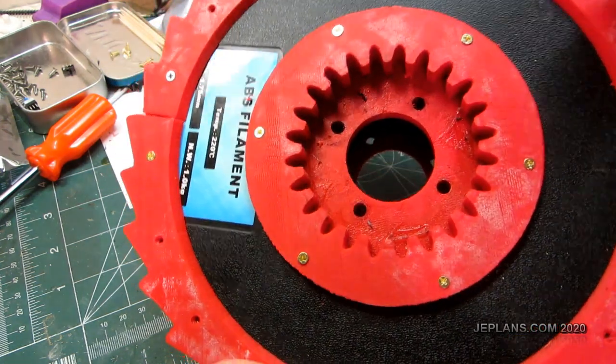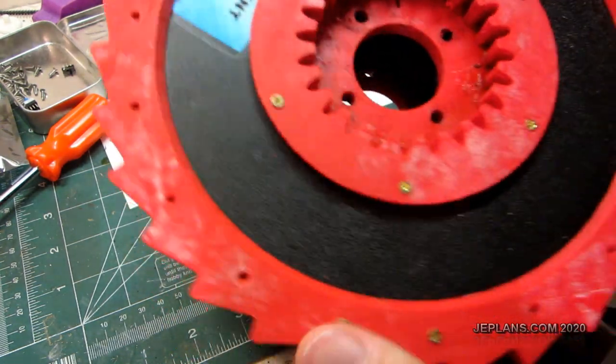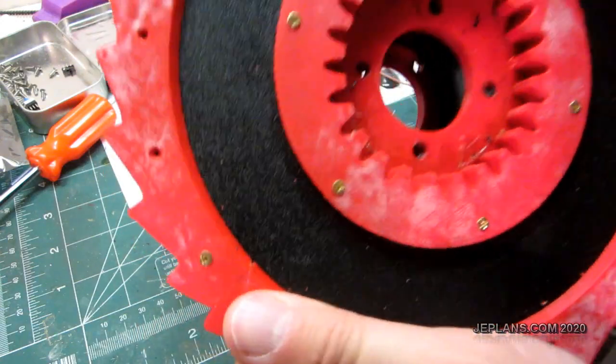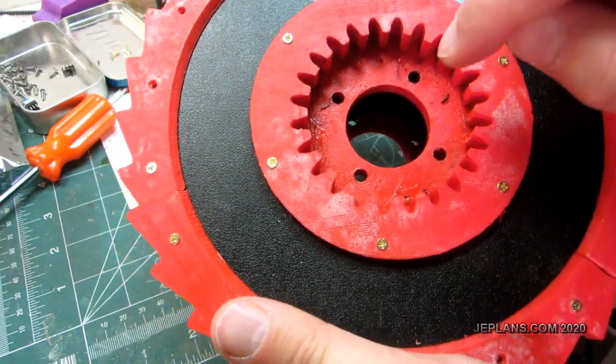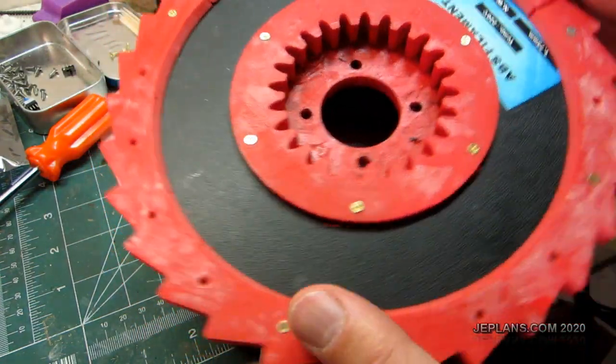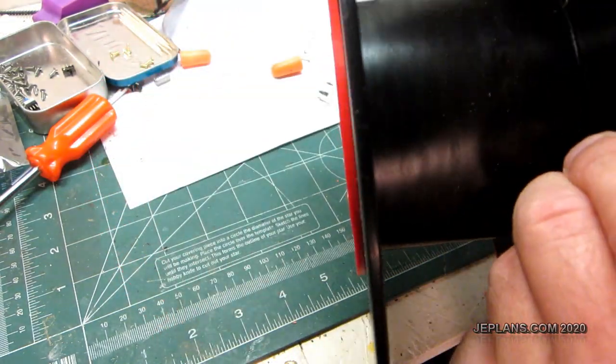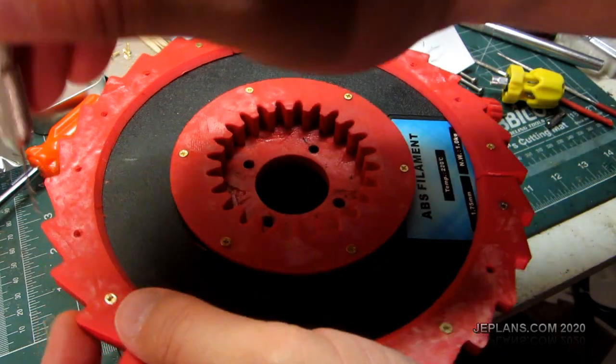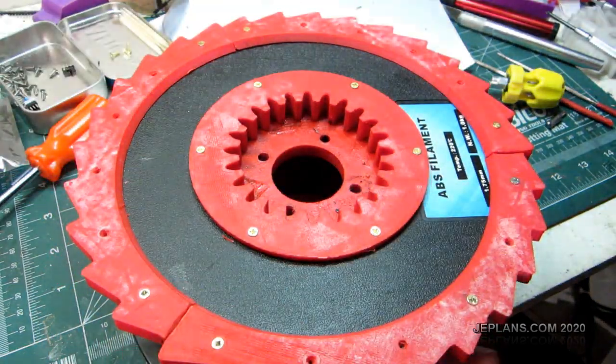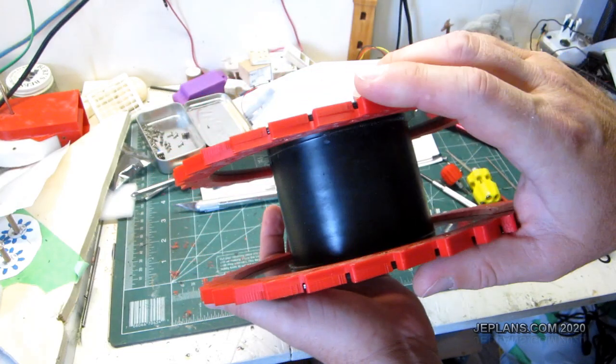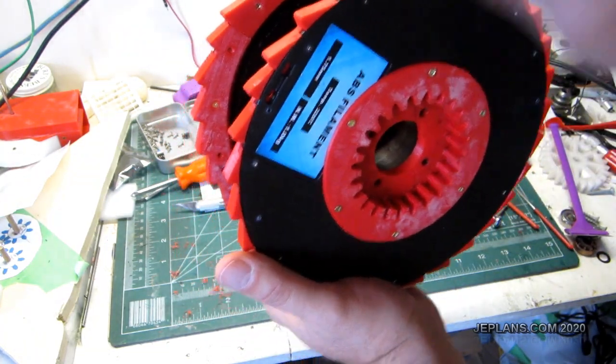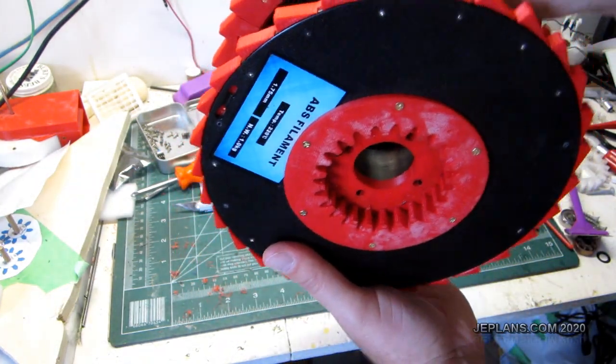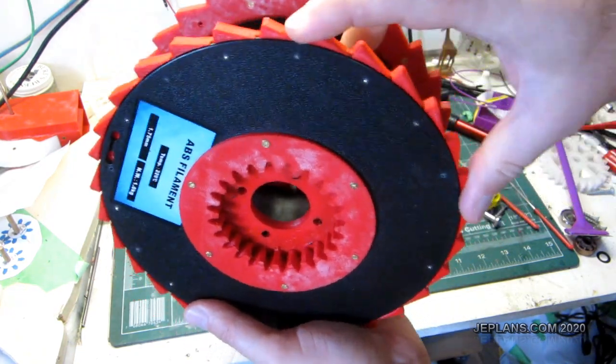I'm adding a ratchet around the outside that's going to catch to hold the spool in place without putting the load on the gears when it's in a resting state. This is actually going to go on the inside. I'm putting on the outside first just so I can go through and line it up and drill the holes for the screws.